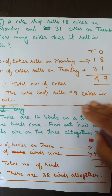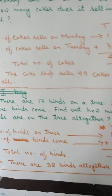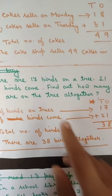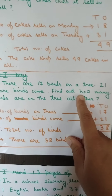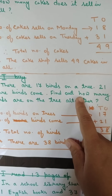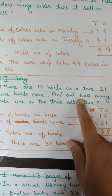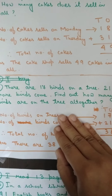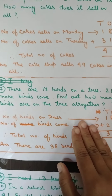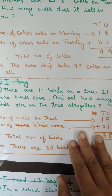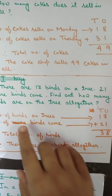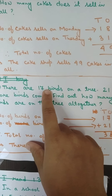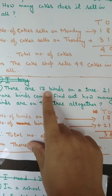Answer: The cake shop sells 49 cakes in all. After you finish, draw one ending line. Now, number seven: There are 17 birds on a tree — in a big tree, 17 birds are sitting. Now 21 more birds came and flew over there. You have to find out how many total birds are there on the tree. Let me start — number of birds on the tree: how many birds were there?